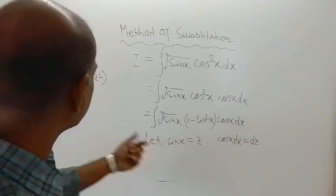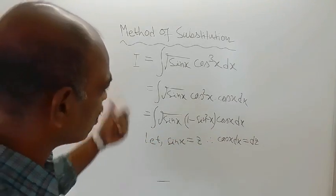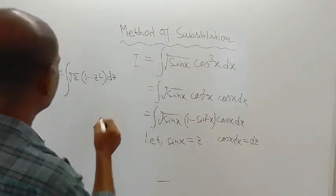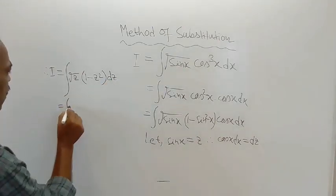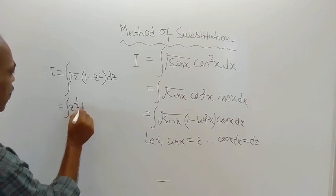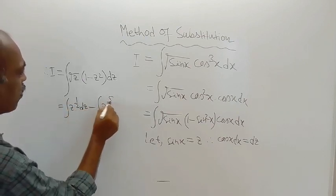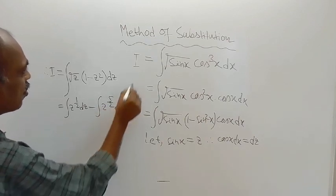1 minus z square is there, and cos x dx is equal to dz. So this is equal to, we can write this way, z to the power half dz minus z to the power 5 by 2 dz.